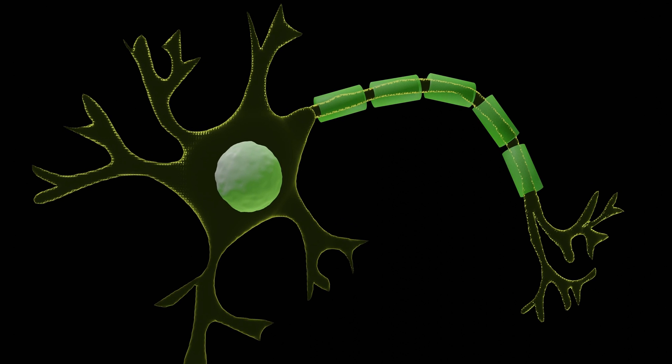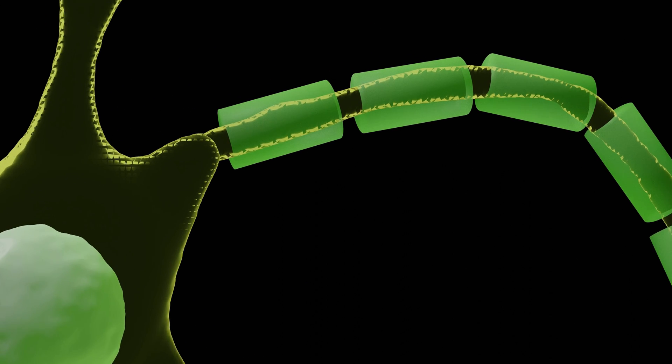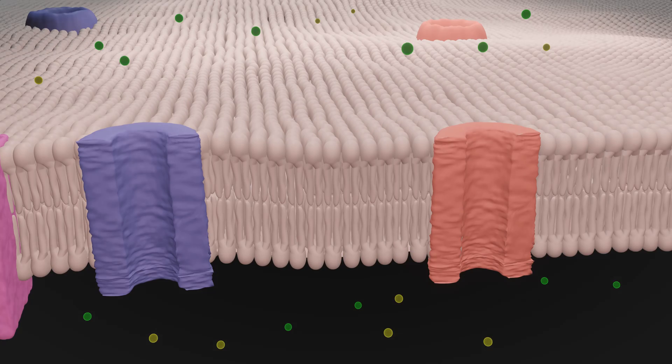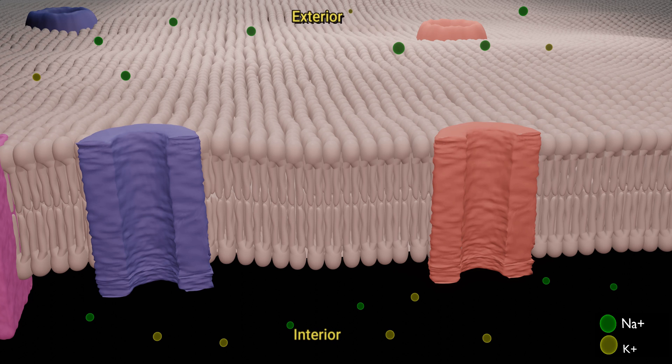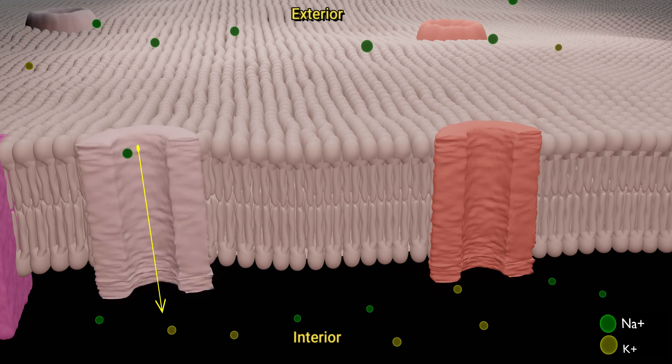The plasma membrane of a neuron is characterized by the presence of protein channels which allow the exchange of ions between the intracellular and extracellular medium. The first type is the non-voltage dependent channels. Na+ channels allow the flow in of Na+ ions.